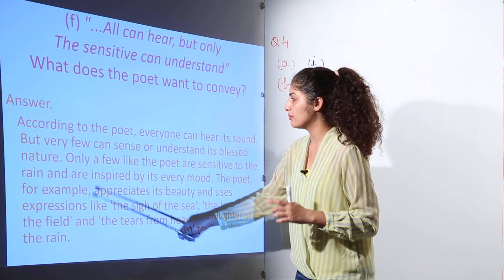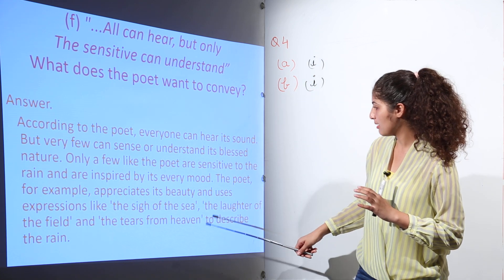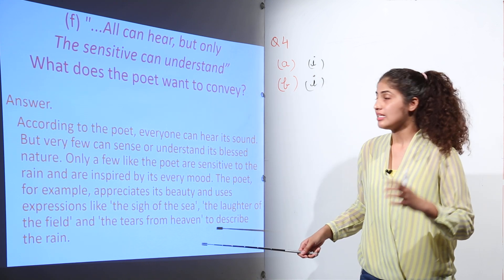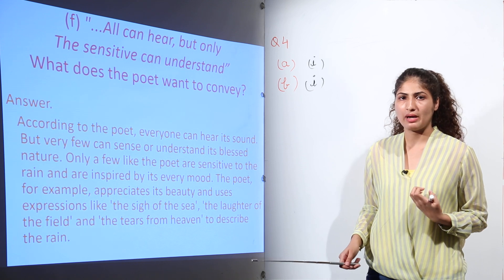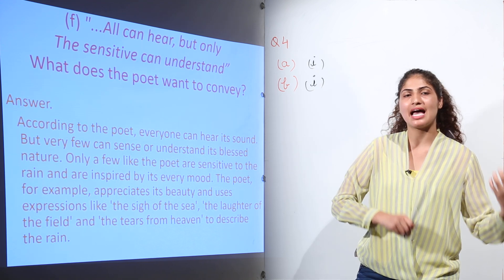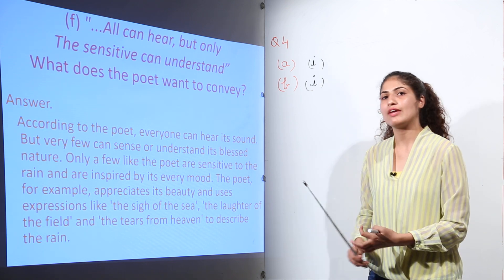And here in this poem, the poet has referred to some phrases, the sigh of the sea, the laughter of the field, and the tears from heaven. These are the phrases which are used by the poet to describe the beauty, to describe the emotions he has attached to the arrival of the rain.